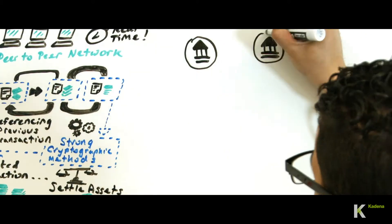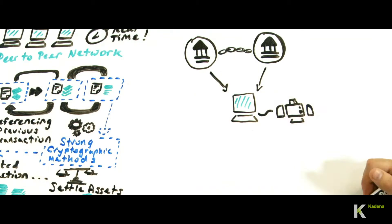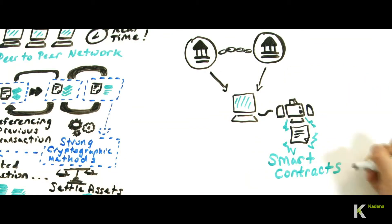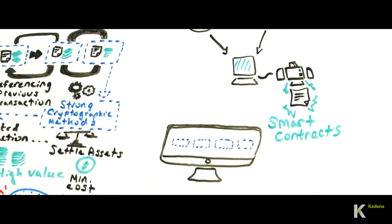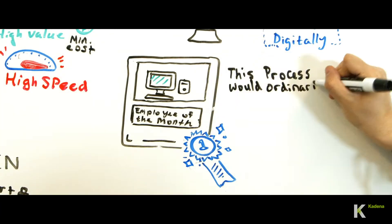By embedding computer code into a transaction, the system can effectively enable automation of any financial contract, called smart contracts, based on rules that define the digital version of the financial agreement. These processes would ordinarily be performed by humans.